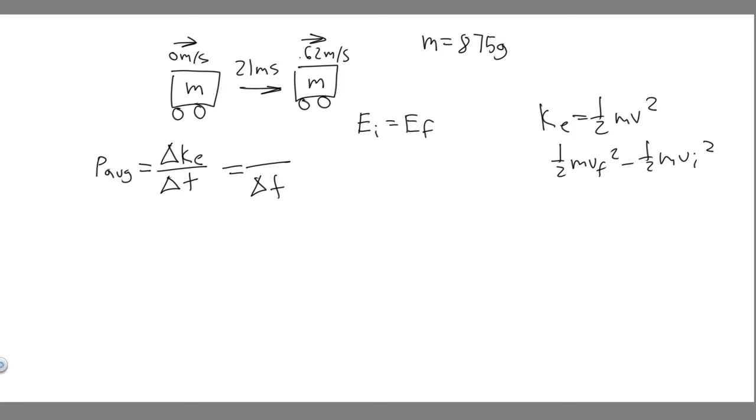We can factor out 1/2 m, and then it's (v_final - v_initial)². Keep that in mind.